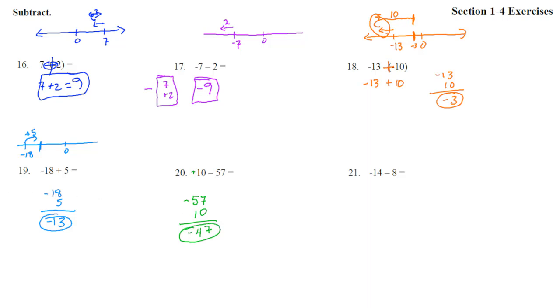And the last one. We have number 21. Negative 14 minus 8. Negative 14 and a negative 8. Notice that these guys are the same. So it's actually going to be a plus problem. This is an addition problem. So 14 plus 8, that's 2 carry the 1. Then it's 22, and they are both negative.